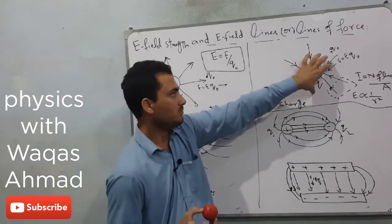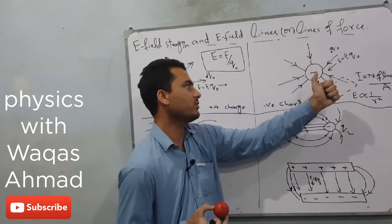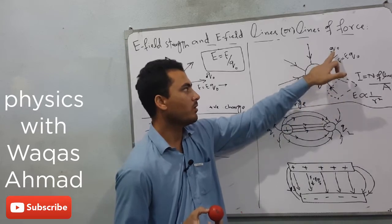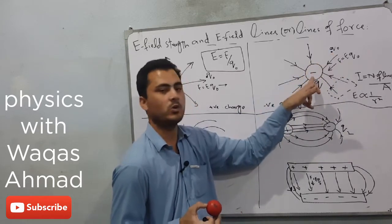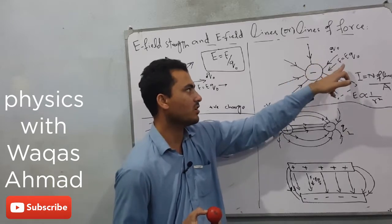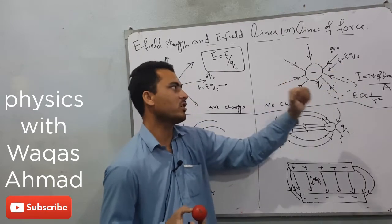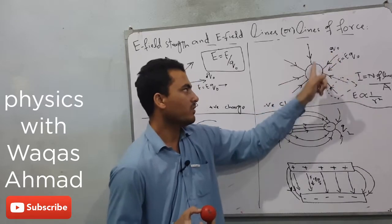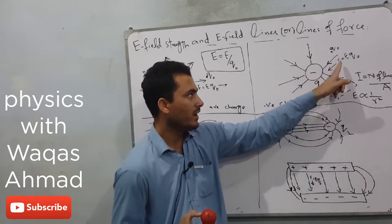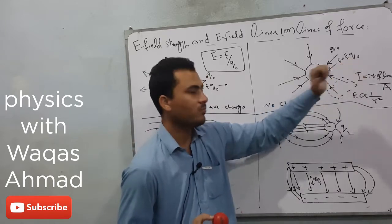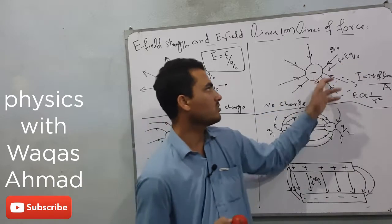Similarly, we can draw electric field lines for an isolated negative charge. If we place a positive test charge near a negative source charge, then this positive test charge will be attracted towards the negative charge, because the force is attractive between a positive and a negative charge. The electrostatic force F equals E times q₀ is basically the electrostatic force exerted by the source charge on the test charge.